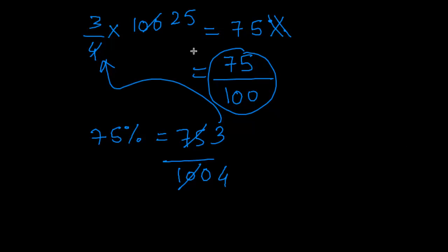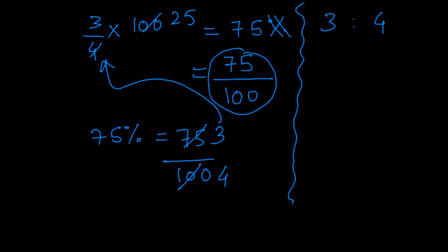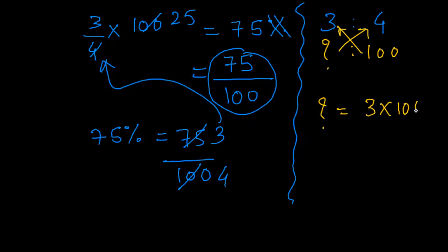Why did we multiply by hundred to obtain the percentage? One simple logic: three out of four — we are considering three parts out of four parts. Then how many parts out of hundred parts? You need to determine this question mark. Simply cross multiply it. So question mark equals three into hundred upon four. And this is what you get.